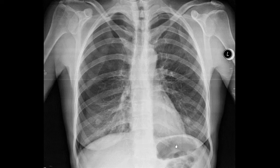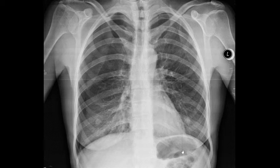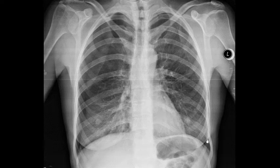Also notable here: many people, including many doctors, often wonder about this dark area — it is simply normal air in the stomach, which physiologically we always have. This is the gastric air bubble. The diaphragm extends all the way to the ribs, and the costophrenic angle should appear dark and sharp, as it does on this normal side.